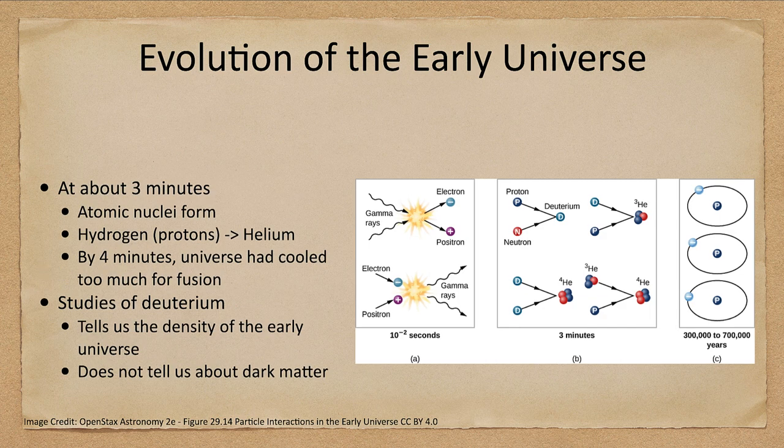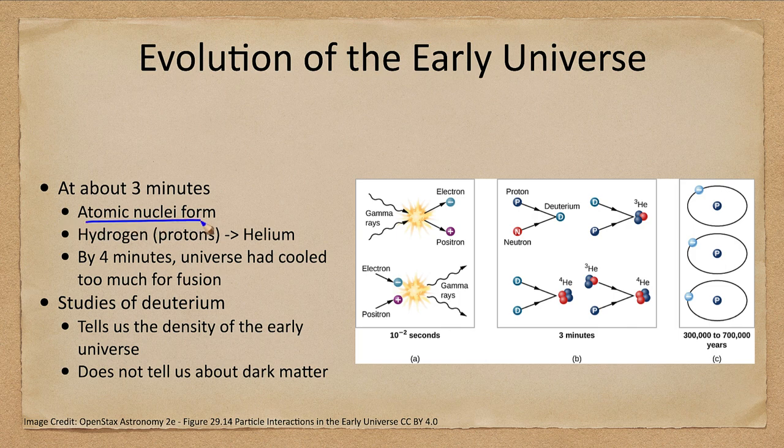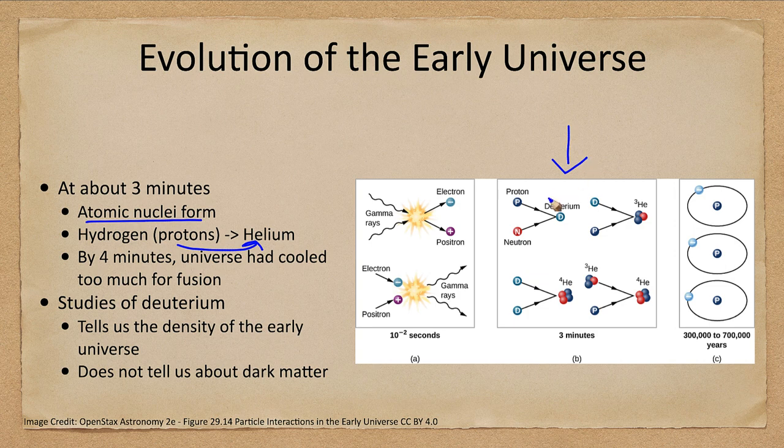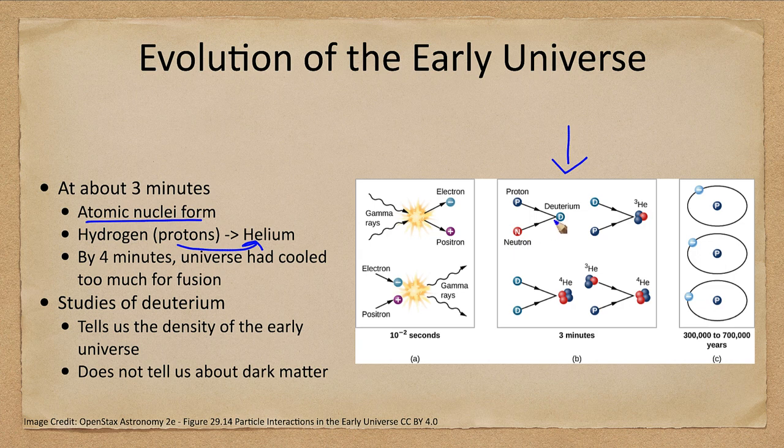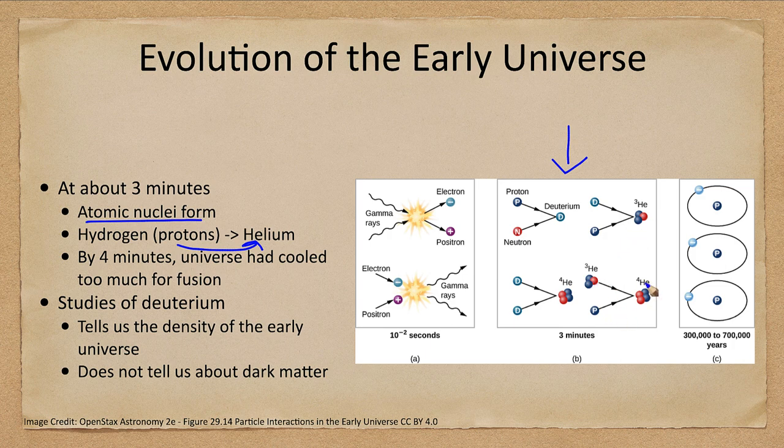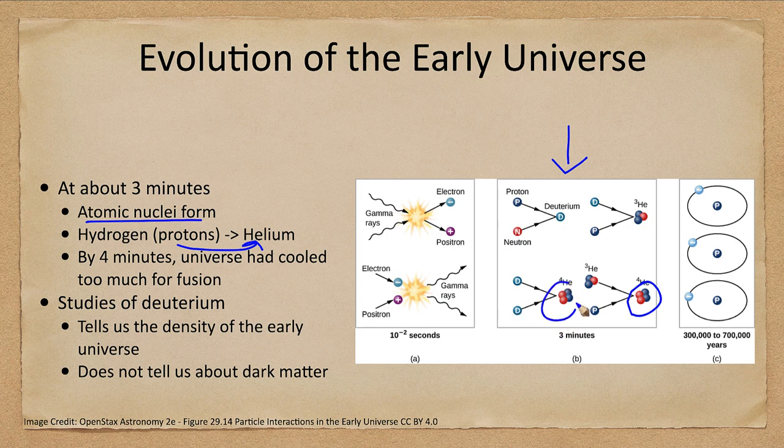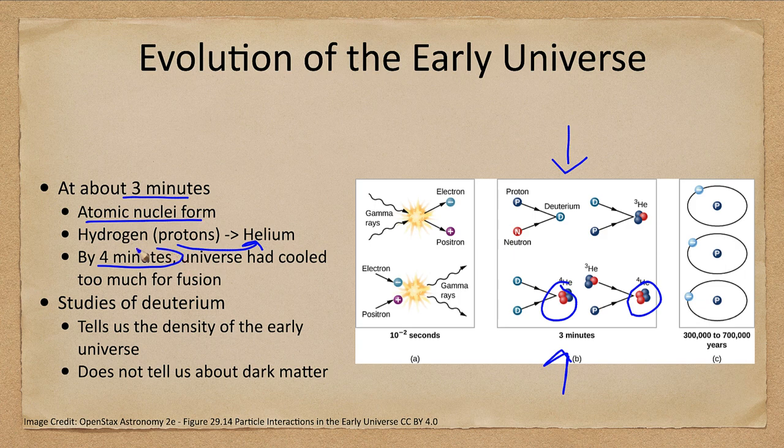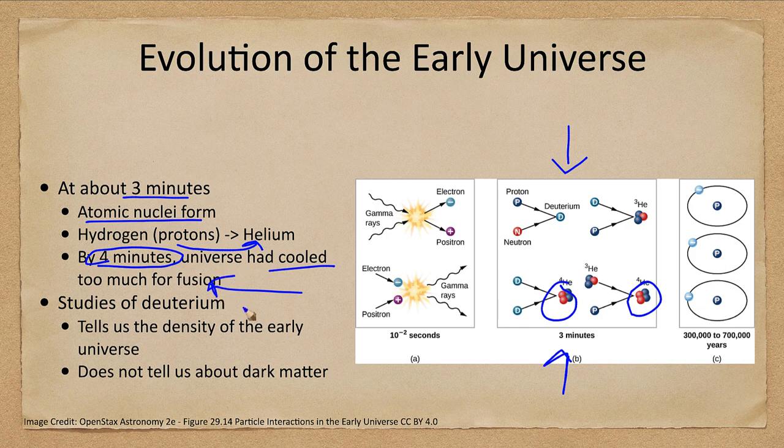As we go through into the first few minutes, after three minutes, we start to form atomic nuclei. Hydrogen fuses to helium. We have something similar to the proton-proton chain, not quite the same, but somewhat similar. Here, a proton and a neutron combine to form deuterium, and then that combines with a proton to form helium-3. Then you can either have helium-3 and a proton to give you helium-4, or two deuterium atoms to give you helium-4. This was going on in the first few minutes—this is when hydrogen fused to helium, and this is where the vast majority of the helium in the universe was formed. By about four minutes, we had a whole minute to do this, but the universe had cooled too much. Fusion could no longer occur—we were at too low temperatures, too low densities for this to occur.